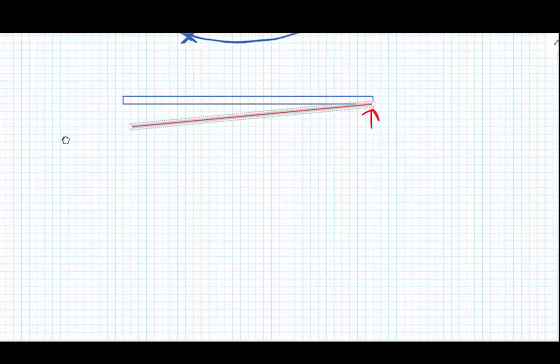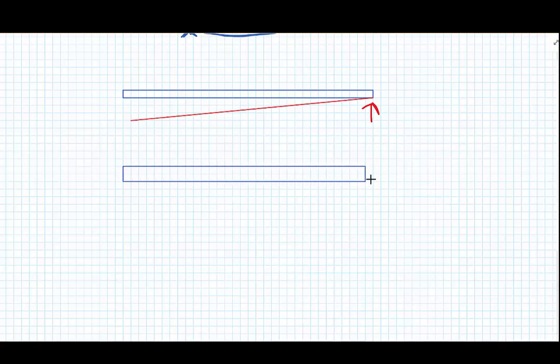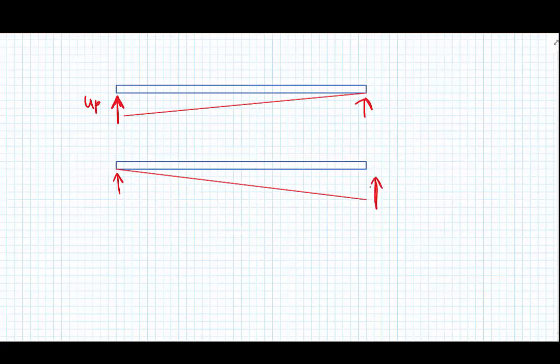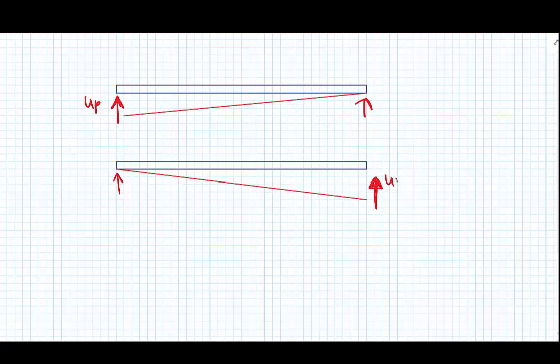And the only way that we can stop this rotation from happening, we know that it doesn't happen because we wouldn't be in equilibrium. We know therefore that the load must point upwards here on the left hand side. Likewise on the right hand side to stop this deformation from happening, the right hand side reaction must also point upwards.